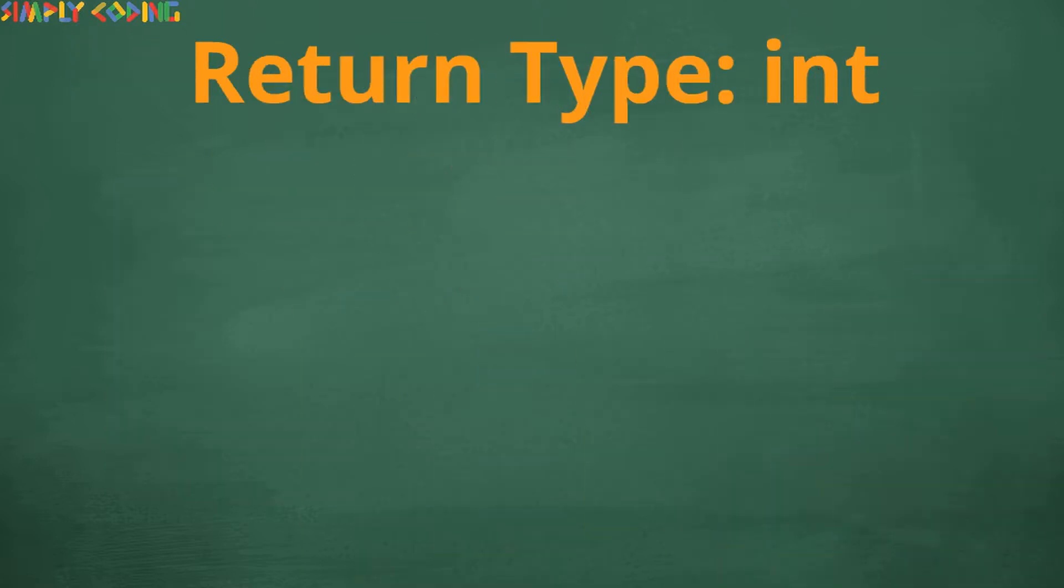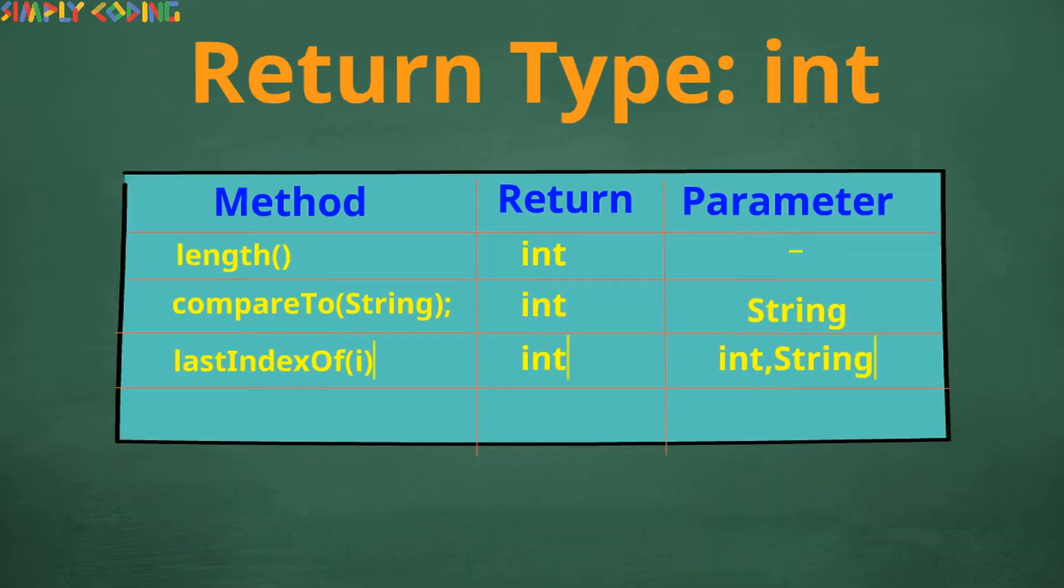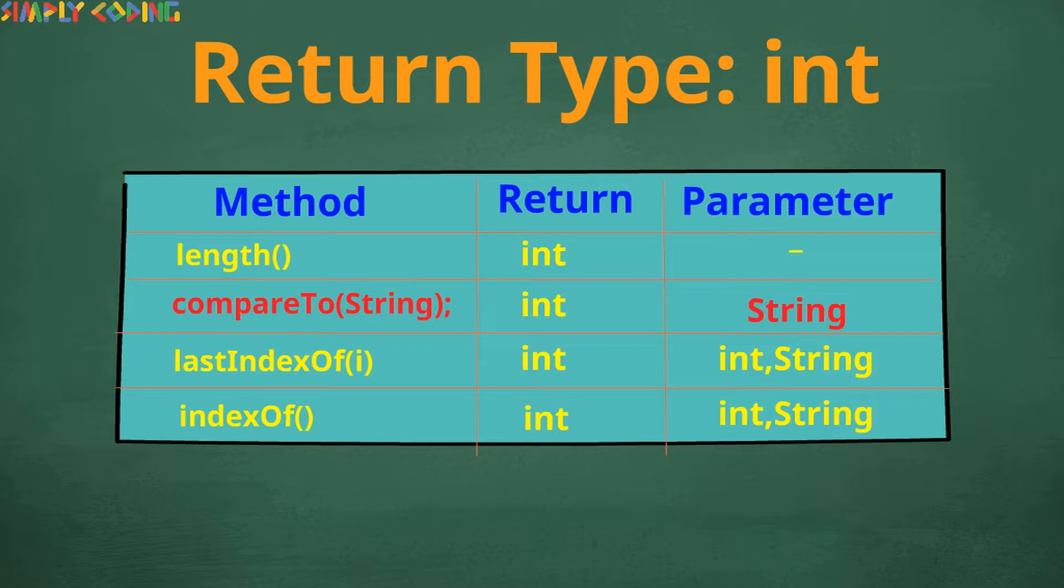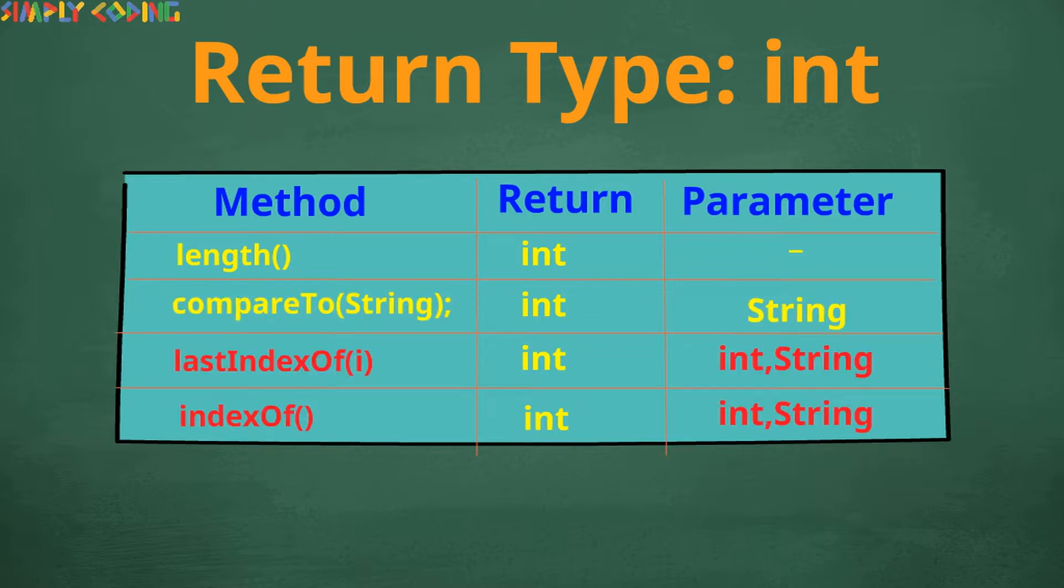Next are set of methods which return int. They either return the index or return int to help sort the string. If you are comparing it has to be with another string. For getting the index you can either pass a char or a string.